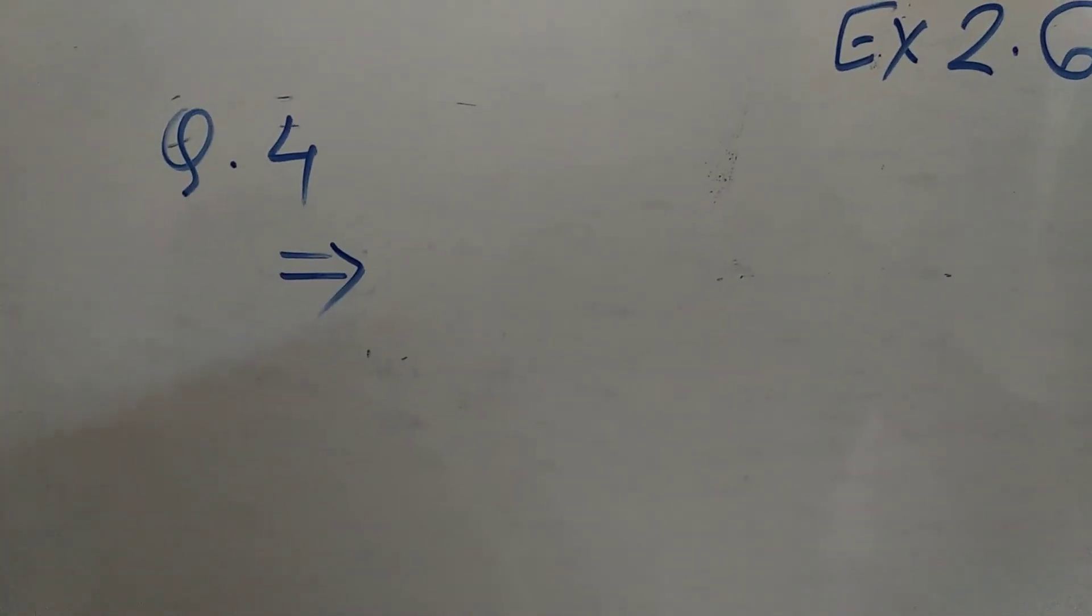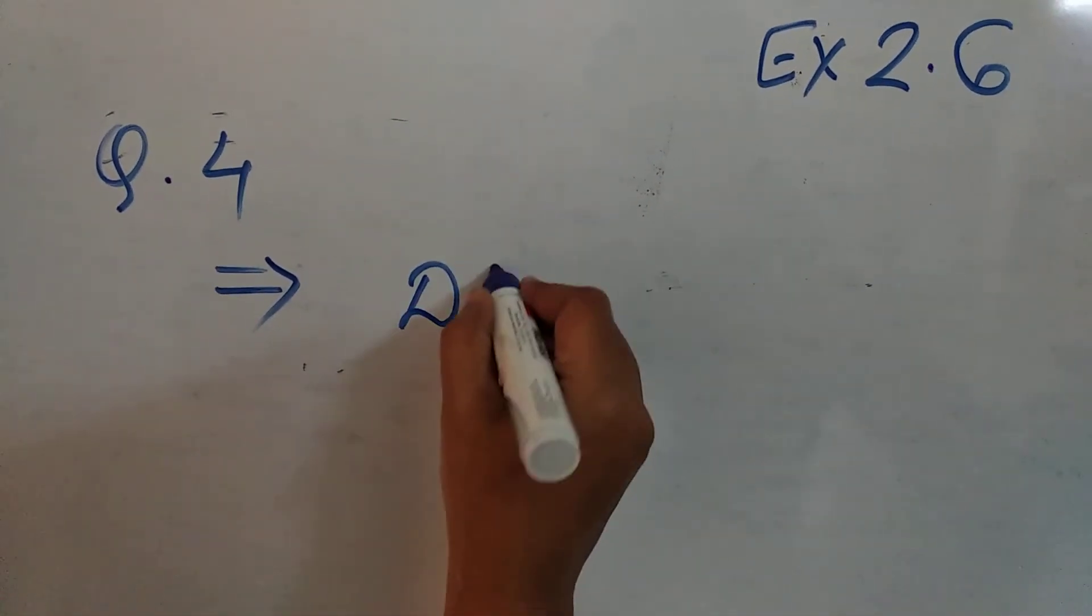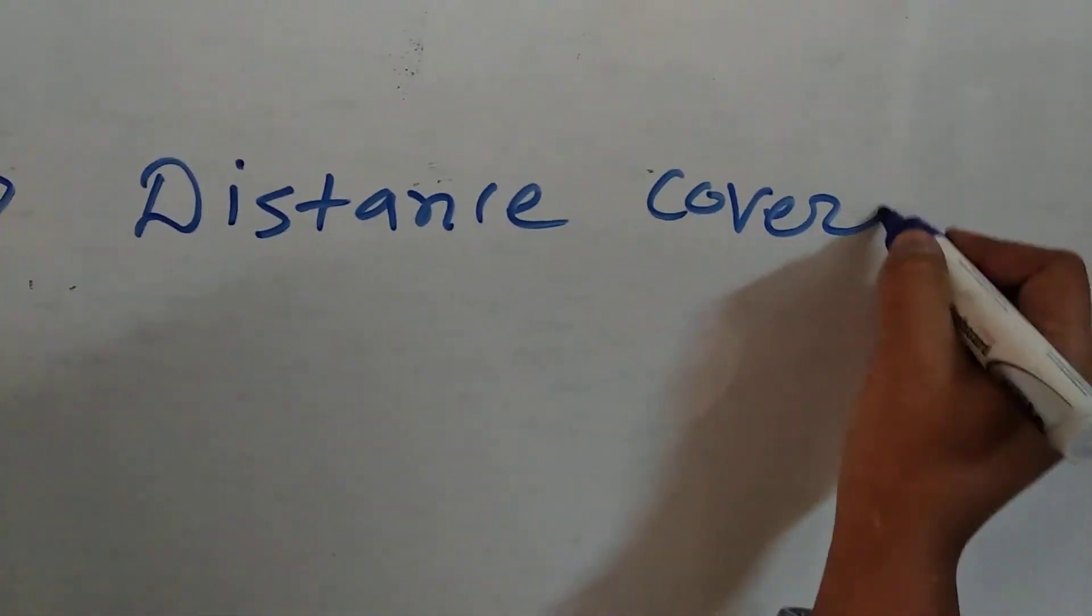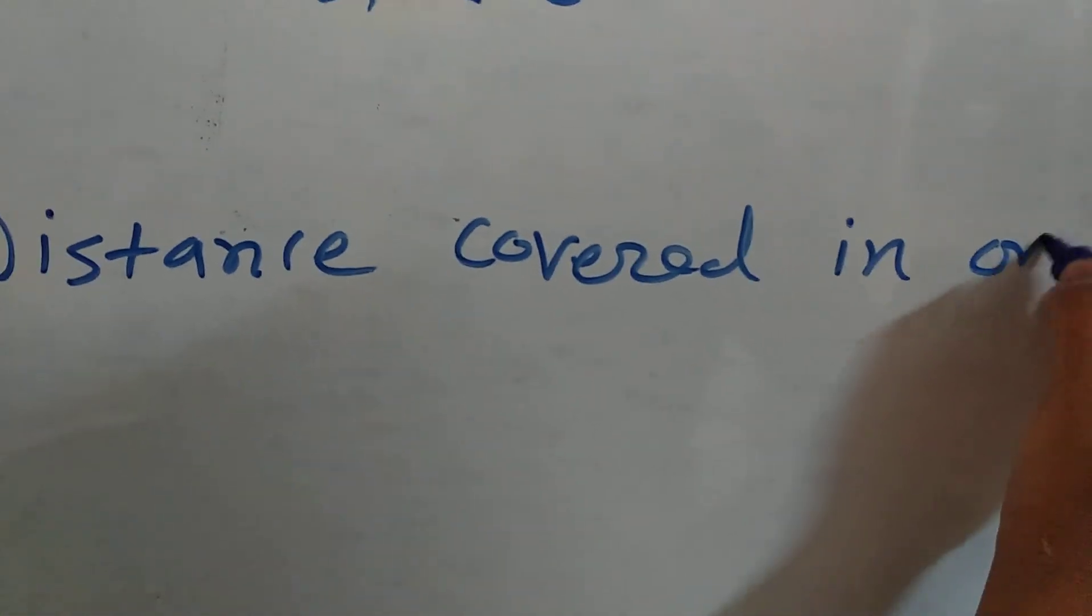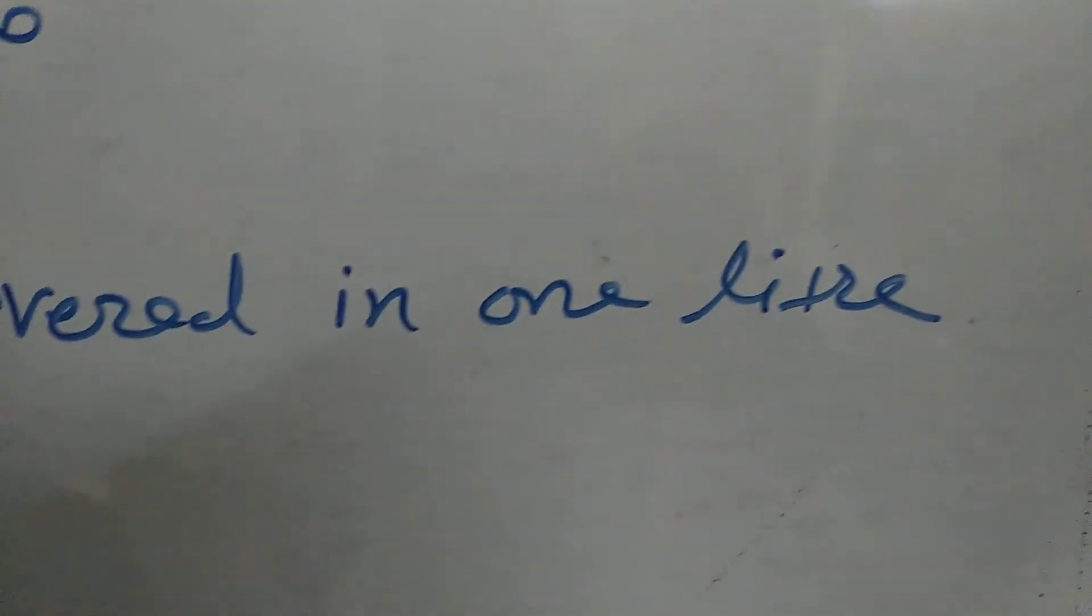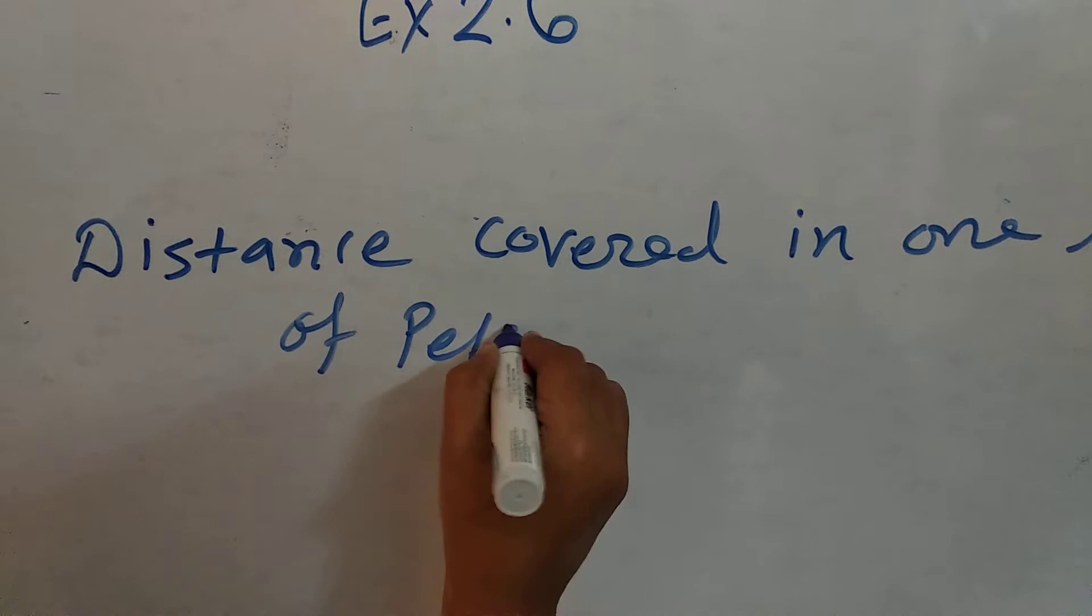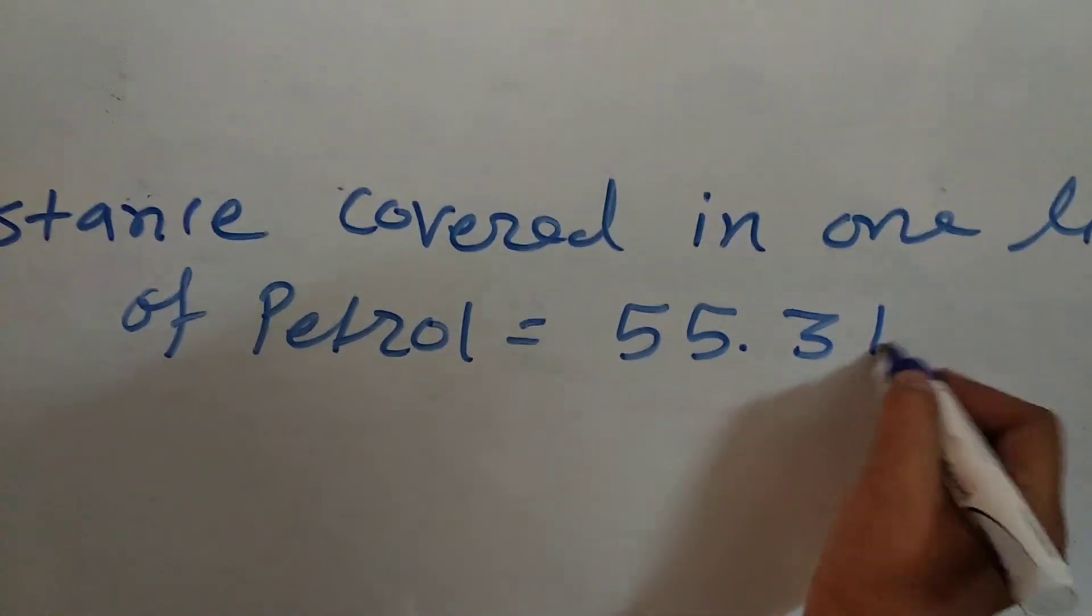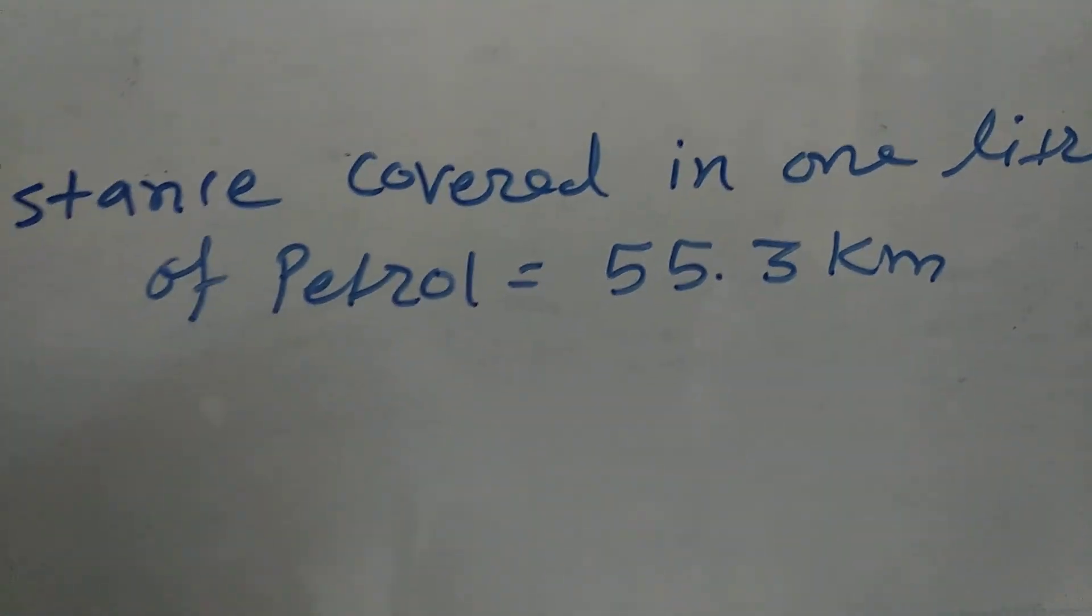First, write what is given. Distance covered in 1 litre of petrol. It is given 55.3 km.